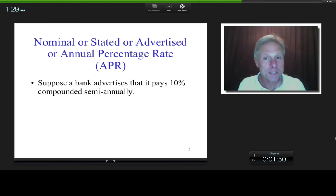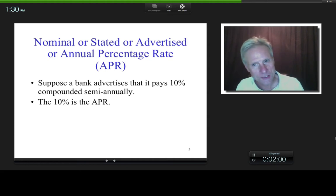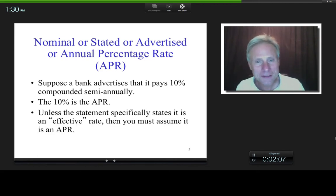Suppose a bank advertises that it pays 10% compounded semi-annually. Well, that 10% is the nominal, or stated, or advertised, or APR. Now, unless something specifically tells you this is an effective six-month rate, or this is an effective two-day rate, or whatever it is, then you have to assume, by convention, that they're talking about the nominal, or stated, or advertised rate.